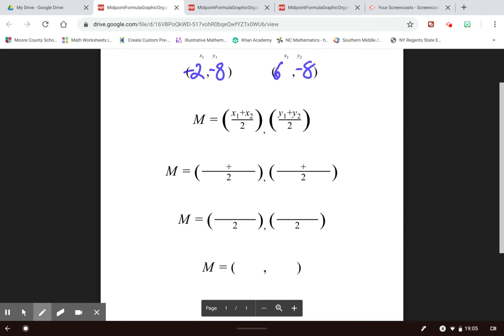Now you'll notice right below where I wrote those two ordered pairs it says M equals x1 plus x2 divided by 2 and y1 plus y2 divided by 2. So I want you to write this down somewhere where you are certain not to lose it or forget it. This is what we call the midpoint formula.